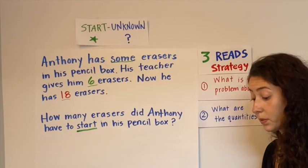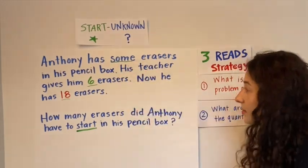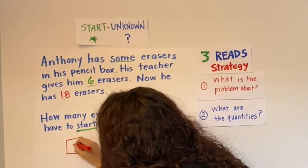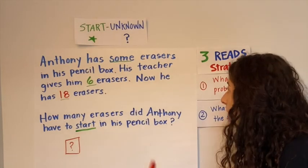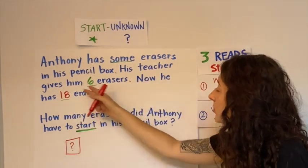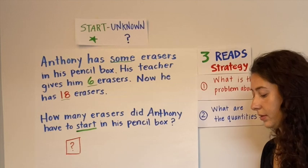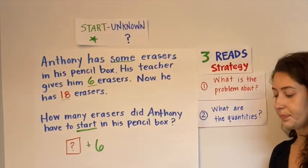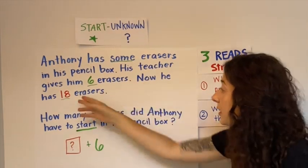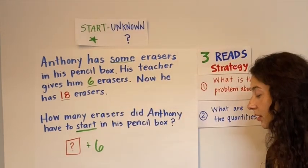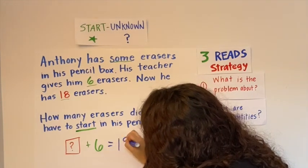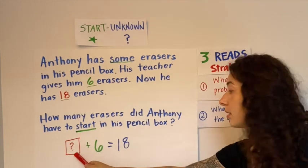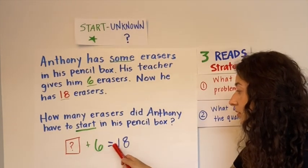So, as we mentioned before, we don't know what this quantity is and that is what we're starting with. So our start is unknown. But then it tells me that teacher gives him six erasers. So that tells me that we're going to add six erasers. Now he has 18 erasers. That lets me know that we're going to end up with 18. So now my horizontal equation is unknown plus six equals 18.